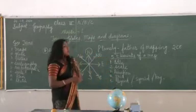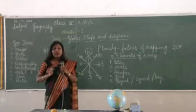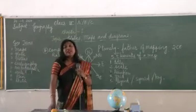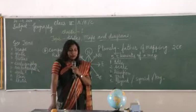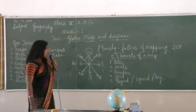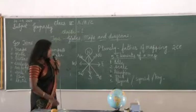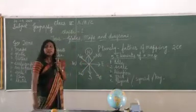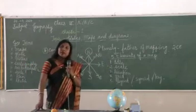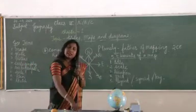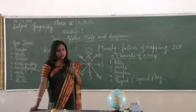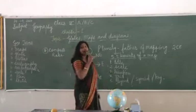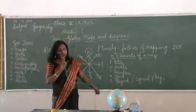Now every map has a scale, and this scale is expressed in three different ways. Without a scale your map becomes incomplete. It is the ratio between the map distance and the ground distance.